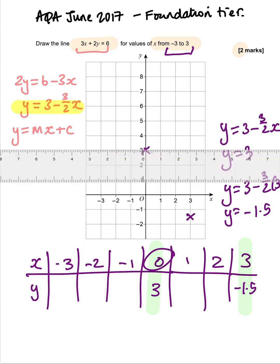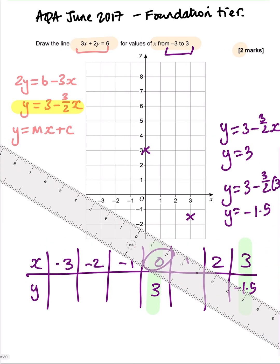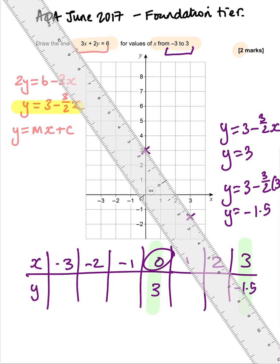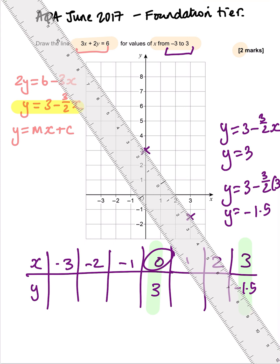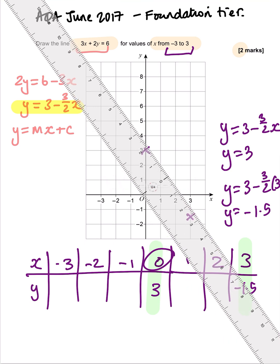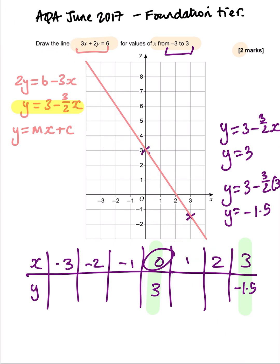Now I'm going to take my ruler and I'm going to line up those 2 points as best as I can. And I'm going to draw my straight line through when I can actually get my ruler lined up. There we go. And we're going to draw a straight line through to cover the whole grid. Because what they wanted us to do was to do the values from minus 3 to 3. So it's got to cover the whole grid.